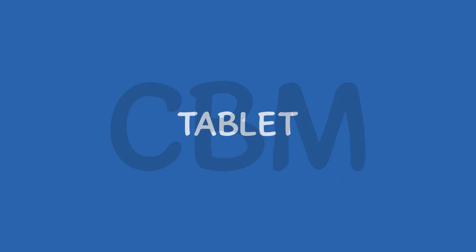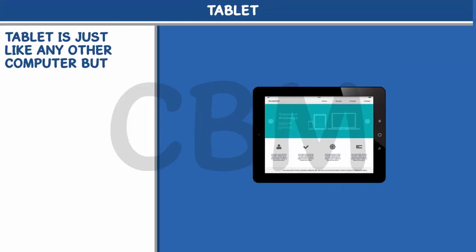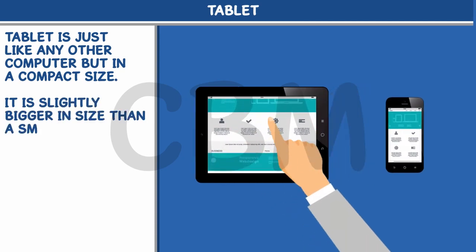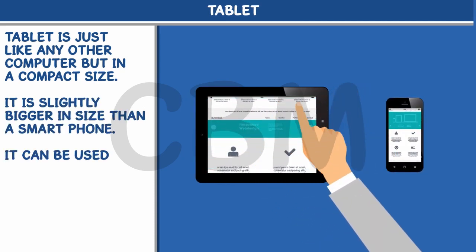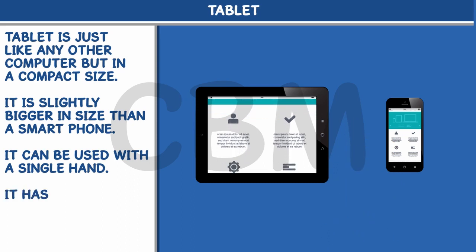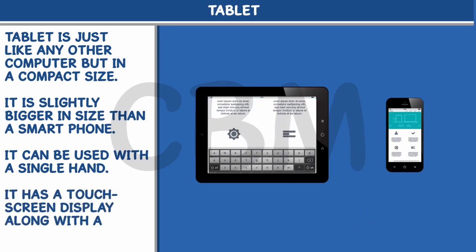Tablet: Tablet is just like any other computer, but in a compact size. It is slightly bigger in size than a smartphone. It can be used with a single hand. It has a touch screen display along with an on-screen keyboard.